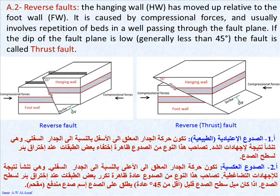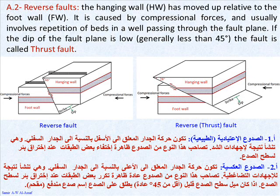A2, reverse faults — the hanging wall has moved up relative to the foot wall. It is caused by compressional forces and usually involves repetition of beds in a well passing through the fault plane. If the dip of the fault plane is low, generally less than 45 degrees, the fault is called a thrust fault.